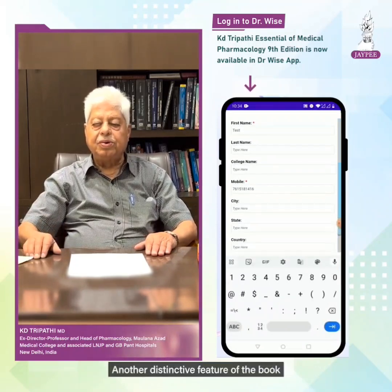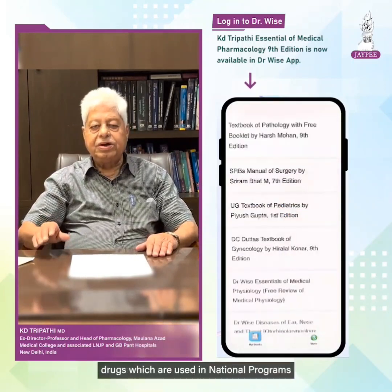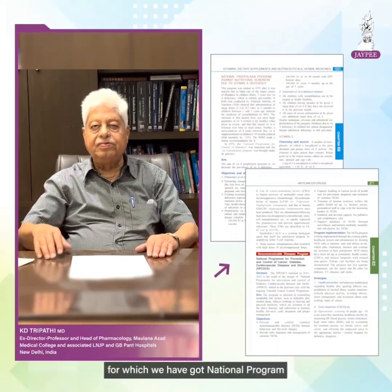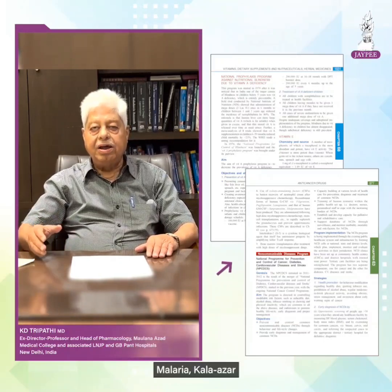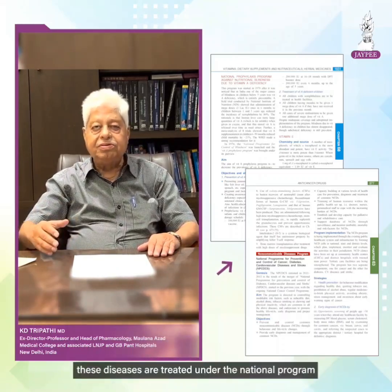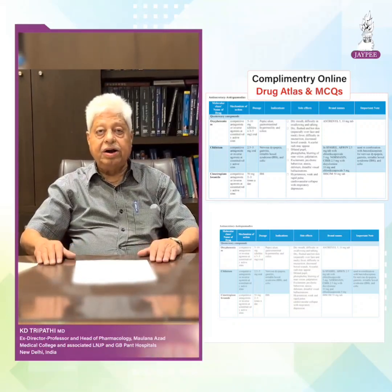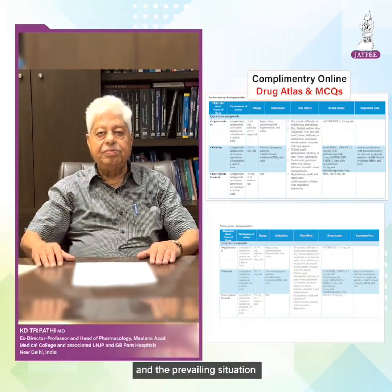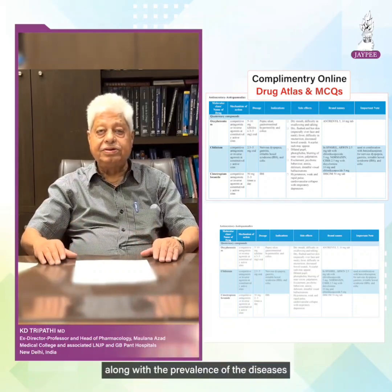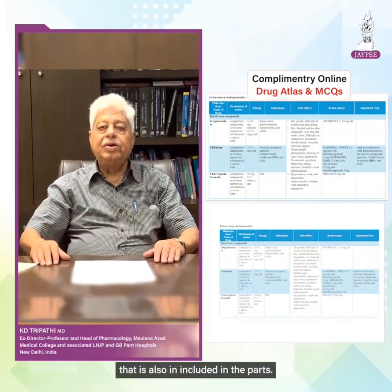Another distinctive feature of the book is India-specific information. There are many national programs, and you must be aware of how these diseases are treated under national programs. The regimens and drugs used are included, along with prevalence of diseases, status of diseases, and the state of resistance in different parts of the country.